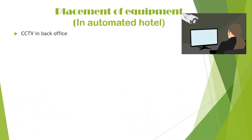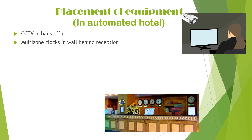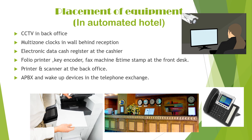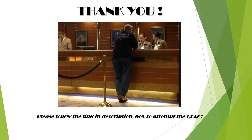In automated hotels, CCTV is placed in the back office. The multi-zone clock is on the wall behind the reception. The electronic data cash register is at the cashier desk. Folio printers, key encoders, fax machine, and time stamp are at the front desk. Printers and scanners are in the back office. APBX and wake-up devices are in the telephone exchange area. These are the various equipment used by the front office, placed in the front desk area and the reservation area — the back area of the front office — in both automated and semi-automated hotels.